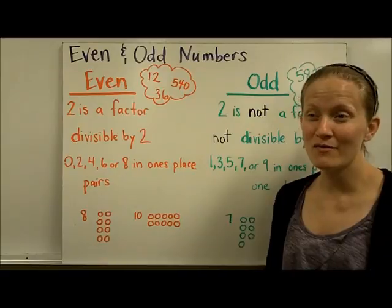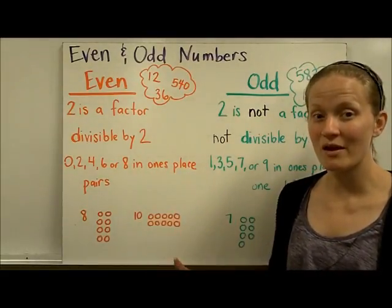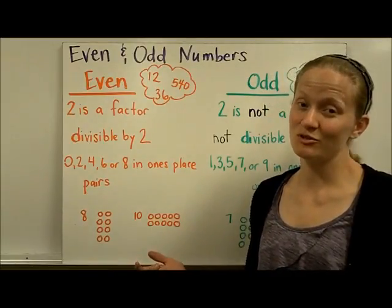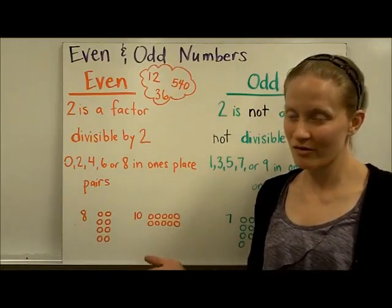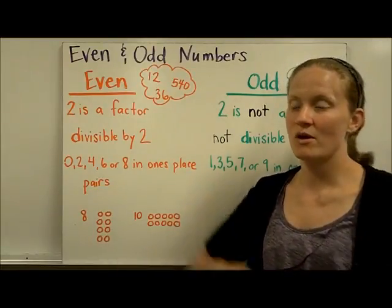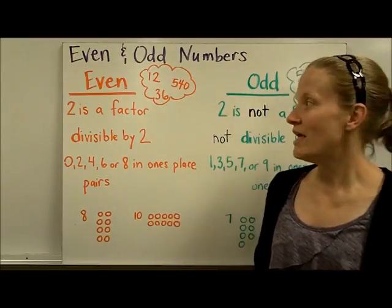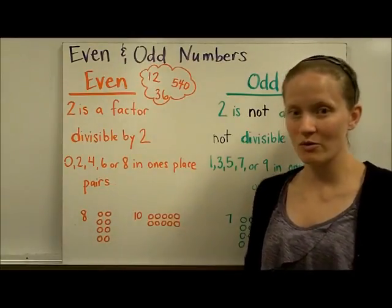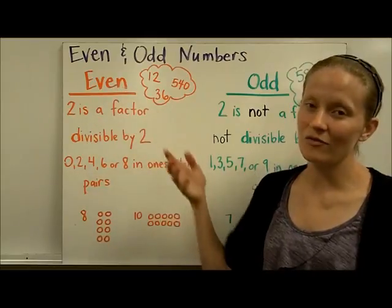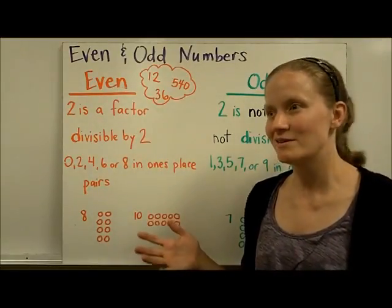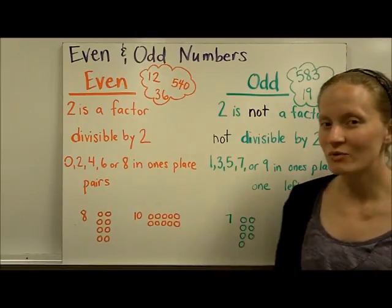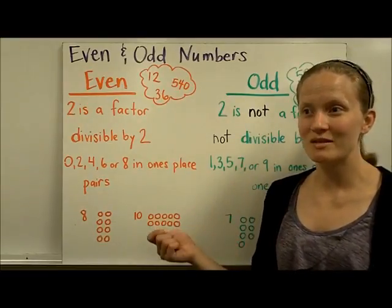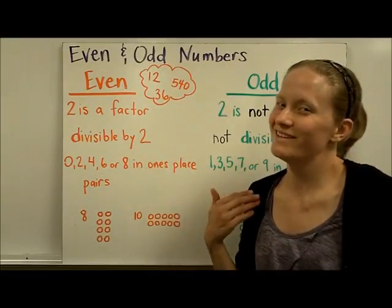One way I like to think about even numbers is that you can make sets of pairs with that number. I gave my kids a bag of goldfish to share in the back seat. I told my daughter to share with her brother, so she gave herself one and her brother one, alternating, and if she had an even number of goldfish she wouldn't have any left over — she could make pairs. But what ended up happening is there was always one left over, meaning she started with an odd number of goldfish, and I always got to eat the extra one.